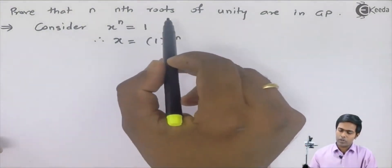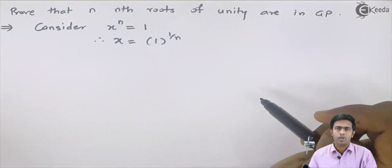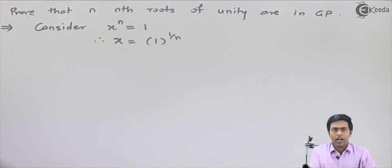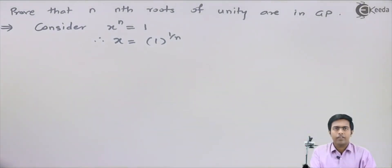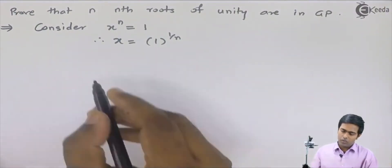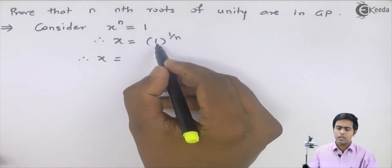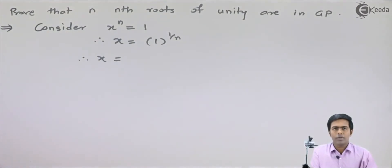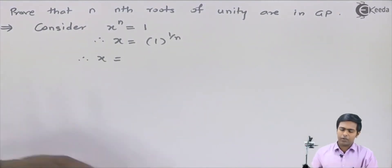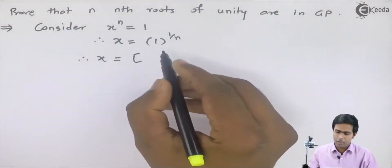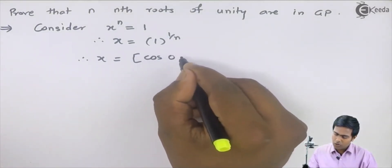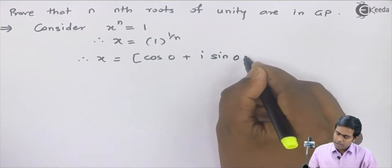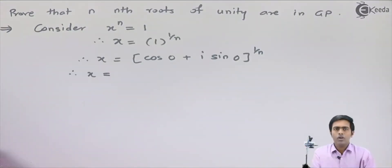We have to prove that these roots are in GP — geometric progression. To prove this, we need to find all the roots of unity and check whether they are in GP or not. We will convert this number into polar form because we want to find the nth root, and De Moivre's theorem requires polar form. So 1 becomes cos(0) + i·sin(0) raised to 1/n.